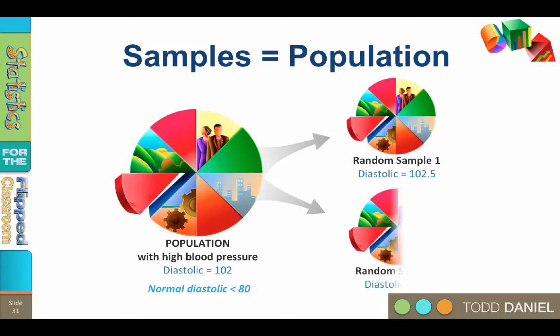Now we draw a second sample from the population. Likewise, we expect them to have high blood pressure, and sure enough they do. Their diastolic blood pressure is 101. Again, the sample mean differs slightly from the population mean, but we conclude that the variation is just due to chance. Functionally, the means 102, 102.5, and 101 are the same — no difference.